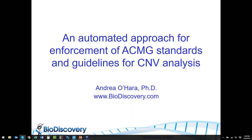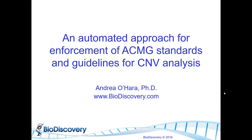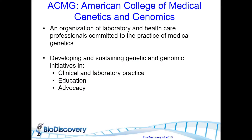I'll be addressing what are the standards and guidelines recommended by ACMG, what tools we can use to apply these rules in a systematic manner for our clinical samples, and then carry those through to the final report with additional ACMG recommendations. ACMG is the American College of Medical Genetics and Genomics — an organization of laboratory and healthcare professionals committed to medical genetics, developing and sustaining genetic and genomic initiatives in clinical and laboratory practice, education, and advocacy, with a focus today on guidelines for copy number variation.